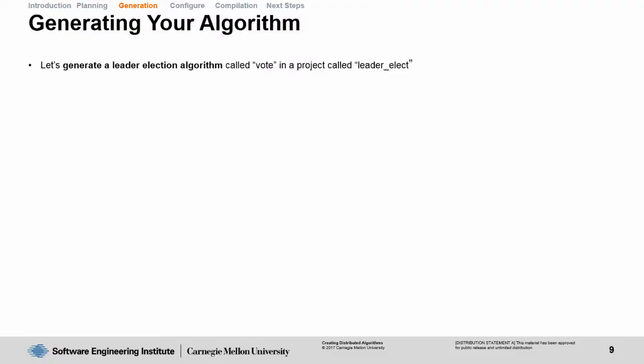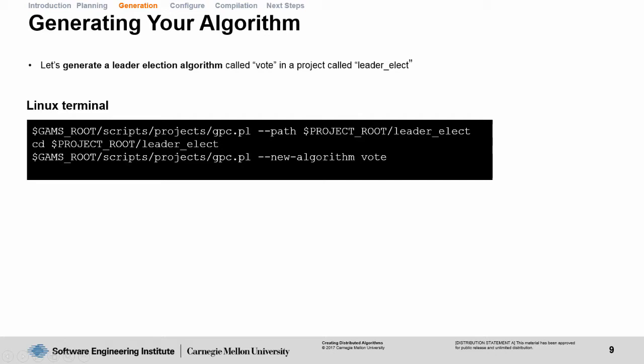Let's generate a leader election algorithm that we just planned called vote in a project called leader elect. Open your Linux terminal, use the gpc.pl to create a new project called leader elect. Then change directory into that leader elect project and create a new algorithm called vote. After you run these GPC commands, you're going to have three new files created in your directory structure.